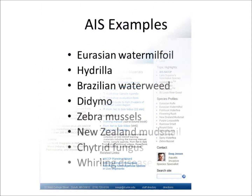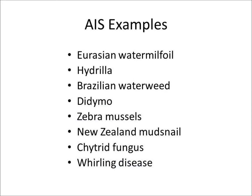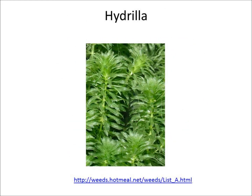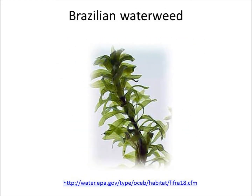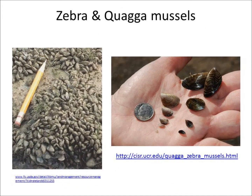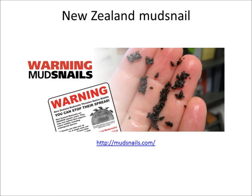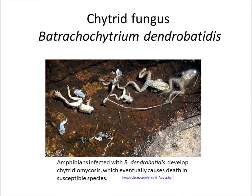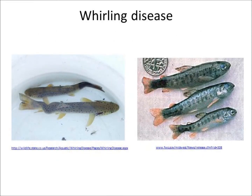Some of the aquatic invasive species that we are concerned about include Eurasian water milfoil, hydrilla, Brazilian water weed, didymo, zebra mussels, New Zealand mud snail, Ketrid fungus, and whirling disease.